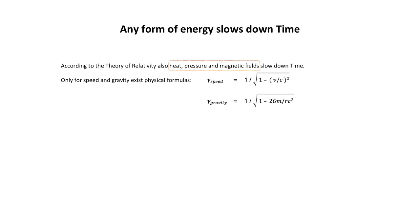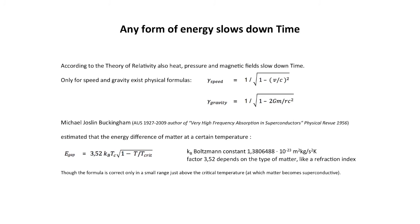Any form of energy slows down time. According to the theory of relativity, also heat, pressure, and magnetic fields slow down time — but only for speed and gravity do physical formulas exist. Michael Buckingham estimated that the energy difference of matter at a certain temperature is defined by a specific formula, but the formula is correct only in a small, very cold range just above the critical temperature at which matter becomes superconductive. You can see that the formula is similar to the two formulas above.